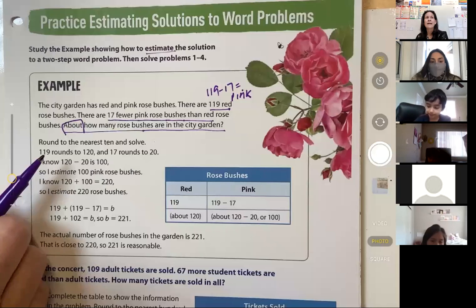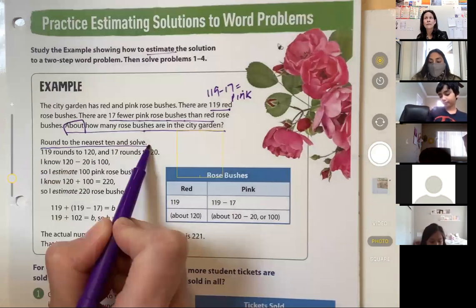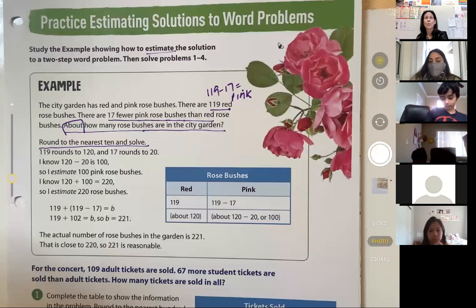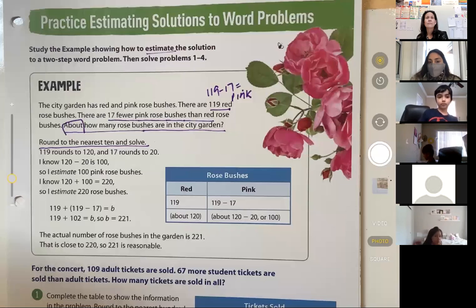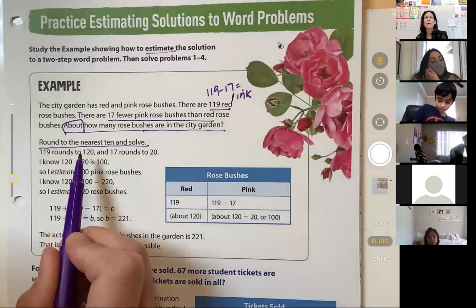Round to the nearest 10 and solve. Round to the nearest 10 and solve. Very important. We have two steps here. We're rounding, and then we're solving. All right? So it's telling you here that 119 rounds to 120.